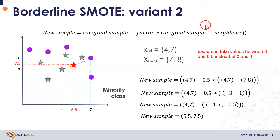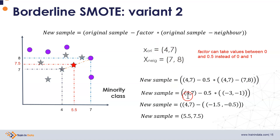The rest of the formula is identical: the original sample is the sample in the danger zone, and the neighbor belongs to the opposite class. With the two numerical examples, we replace all values in the formula and obtain a synthetic value that, as you can see, is placed closer to the original minority class example from the danger zone.